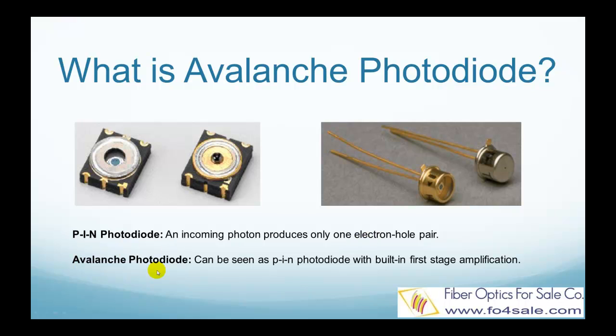Avalanche photodiodes, also called APDs, can be thought of as photodetectors that provide a built-in first stage of gain through avalanche multiplication. By applying a high reverse bias voltage, typically 100 to 200 volts in silicon, APDs show internal current gain effect around 100, due to impact ionization, also called the avalanche effect.